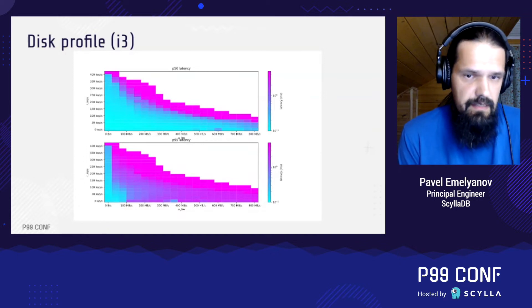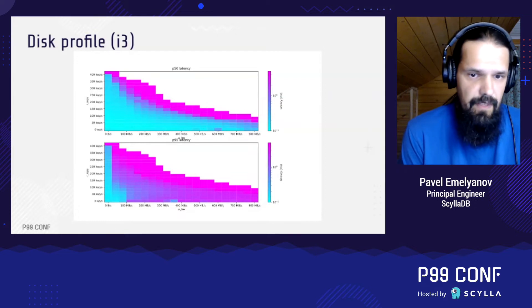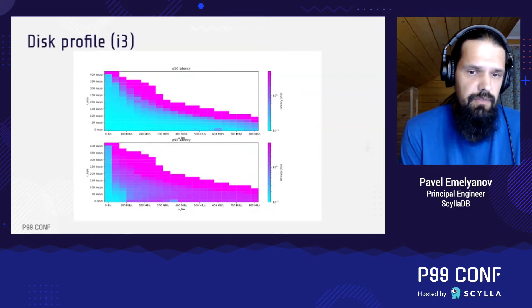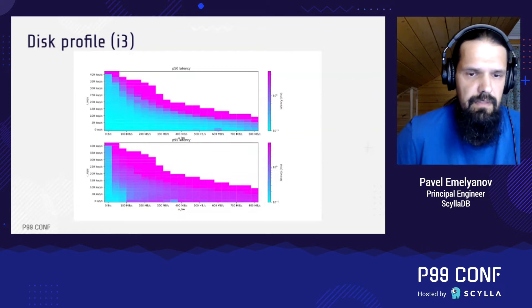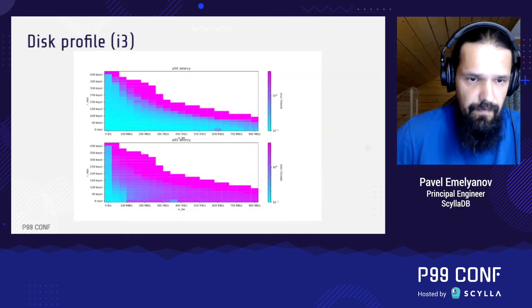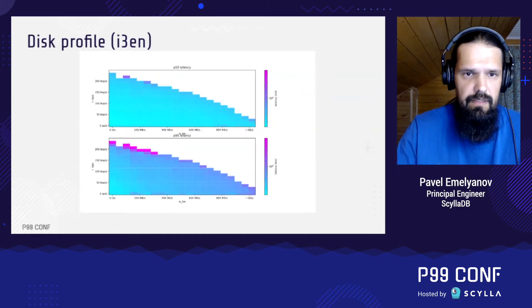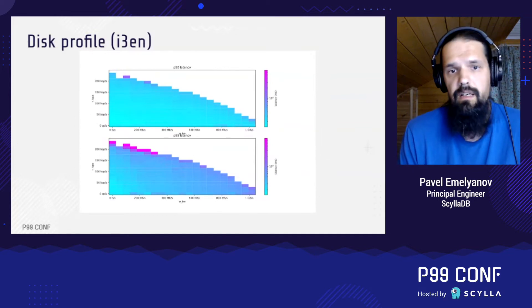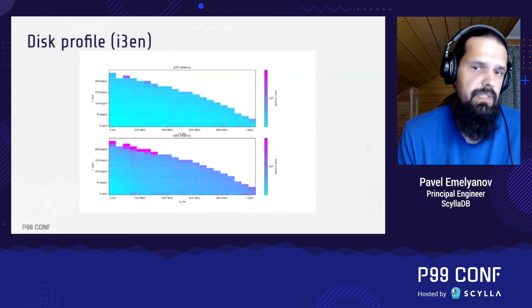It's clear that this disk doesn't service mixed workload well enough. Reads can stay under one millisecond only if the total load on the disk is much less than its expected half-duplex maximum. And this picture looks pretty much the same for many other disks that we've checked. Here is the AWS i3EN disk — this one is notably better, but still not as good as we'd like it to be.